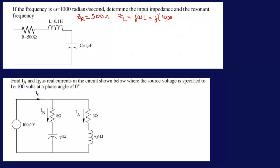And L is 0.1 henrys, so this is equal to j100 ohms.